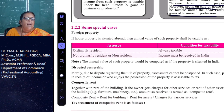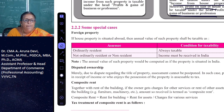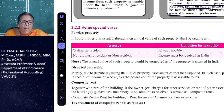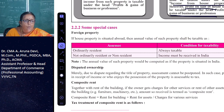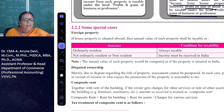Second special case is disputed ownership. If there is a dispute about the ownership of the property, we have to understand who enjoys the possession of the property, as that person is liable to tax. The person who is in receipt of rental income or who enjoys the possession of the property is assessable to tax.